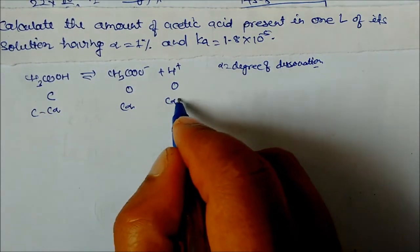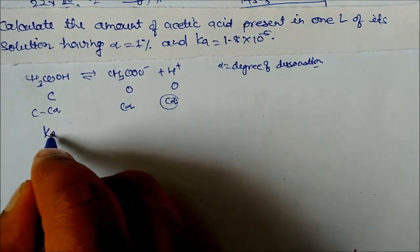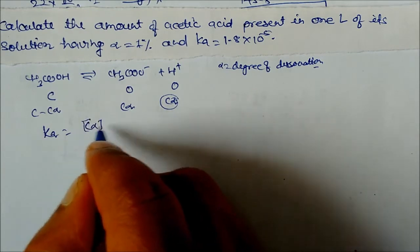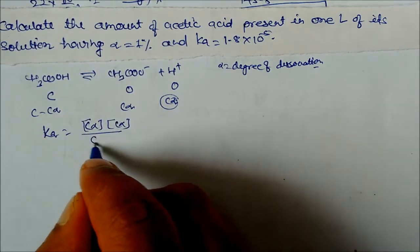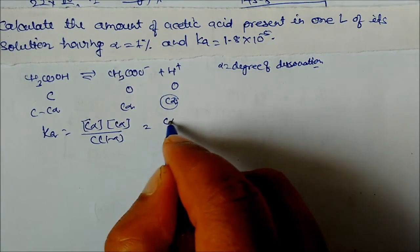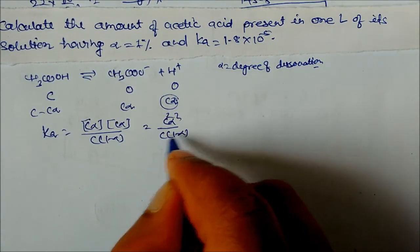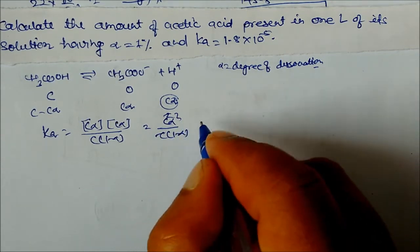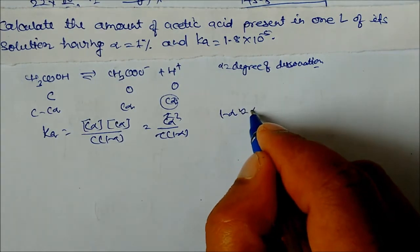The acid dissociation constant Ka equals the product of concentrations: (C·α)(C·α) divided by C(1−α). So we get C²α² divided by C(1−α), which simplifies to Cα² equal to Ka, since 1−α is approximately equal to 1 because alpha is very very small.